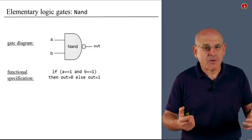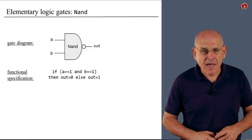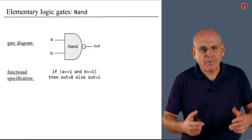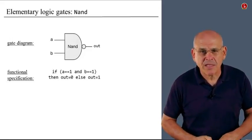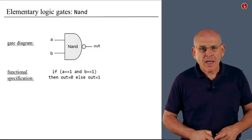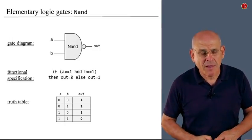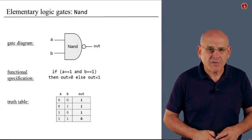Here is a functional description of this gate. If both inputs are 1, we output 0. Under any other circumstance, we output 1. And here is also a truth table description of the same functional specification.